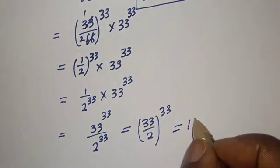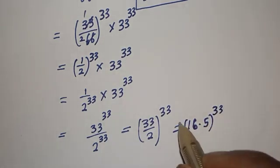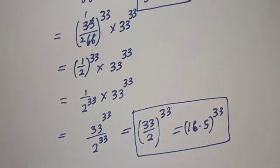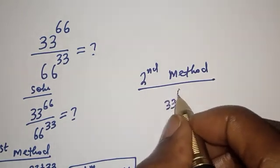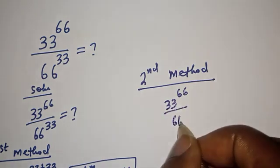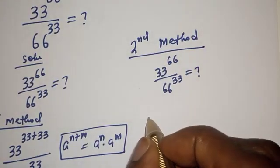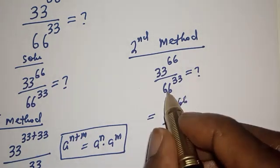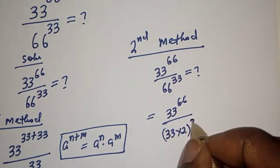That is 16.5 raised to power 33. This is equal to 33 raised to power 66 divided by 66 raised to power 33. Then, equal to 33 raised to power 66 over 66, which can be written as 33 multiplied by 2 raised to power 33.